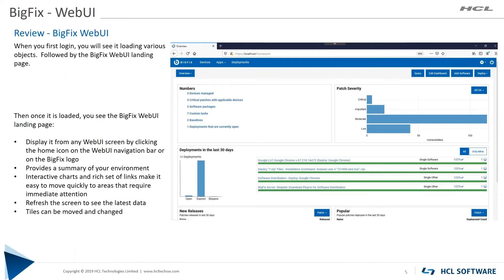Once you log in, this is the default screen you get. You get quite a bit of information right off the screen: the basic information like how many devices are being managed and how many critical patches with applicable devices are out there. You can look at patch severity divided out by OS — right now this diagram is showing it for all OSes — and if you hover over any of the bars you can get the detailed number information.